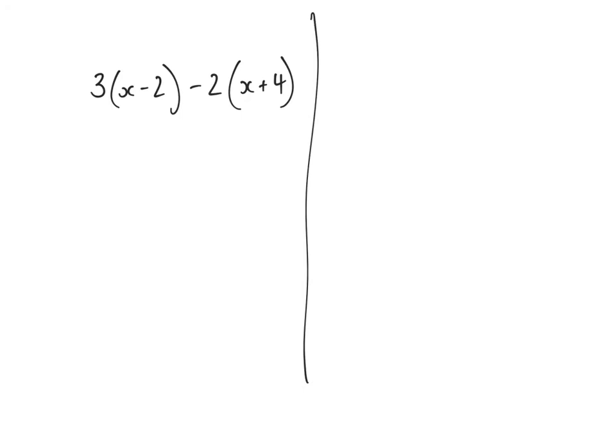Now the next example looks slightly different. We're going to start with the same method though. We're going to do the first bracket. We've got 3 times x is 3x. It's a negative 2. 3 times negative 2 is negative 6.